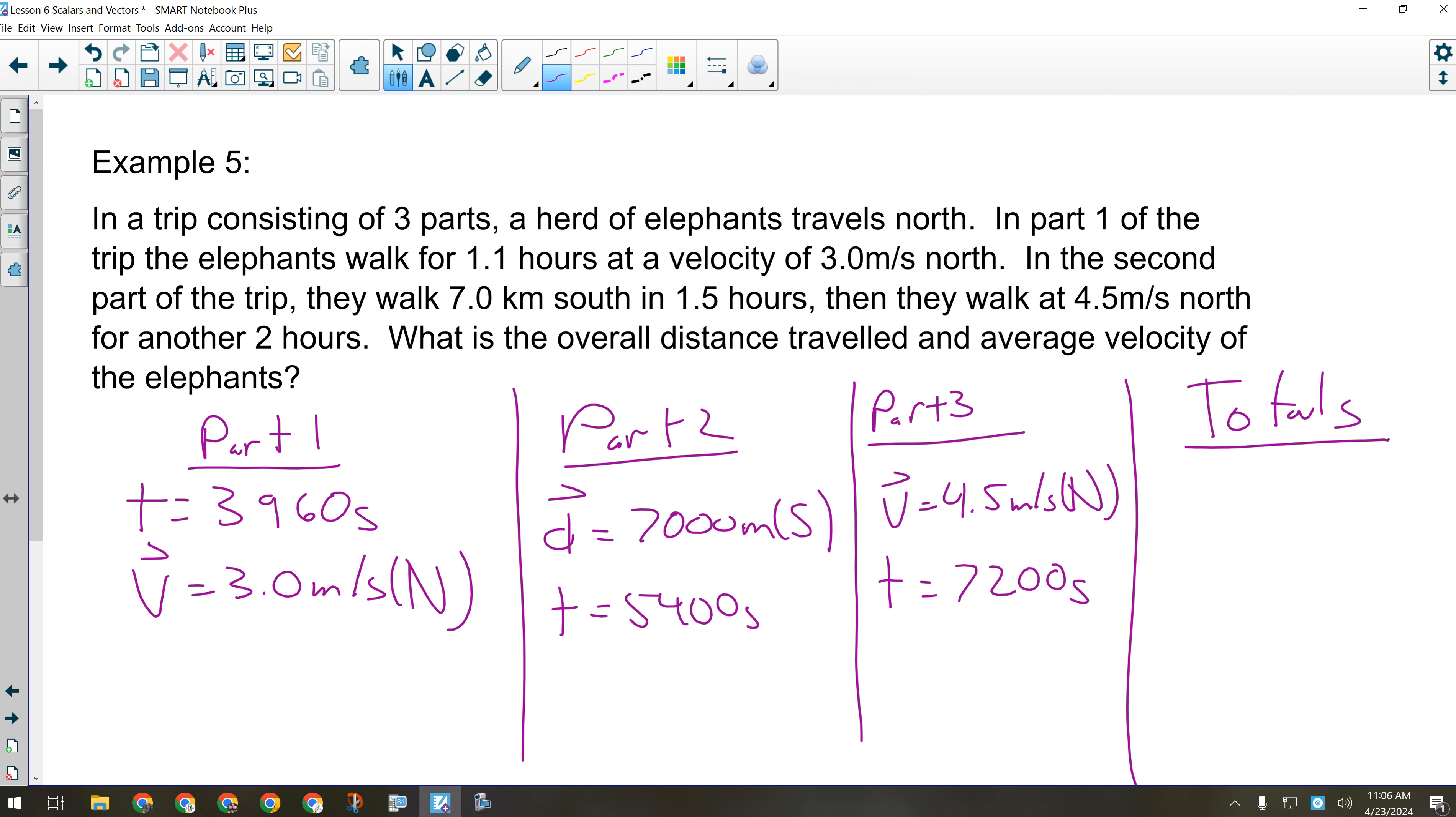They want the overall distance, so the total distance, and they want the average velocity of the elephants. So they're getting their steps in, these elephants. You've got to figure out how far they go, and then their average velocity. So hopefully those numbers now all into the correct units will help you. I'll give you a couple more minutes, and then we'll look at the next step. So if I want the total distance, I obviously need to know how far the elephants go in each section of this trip, or in total.